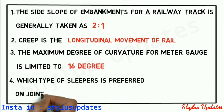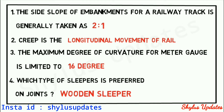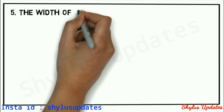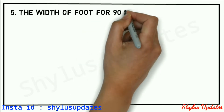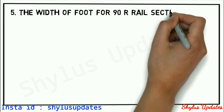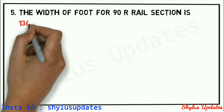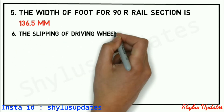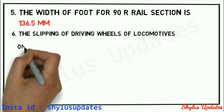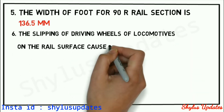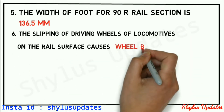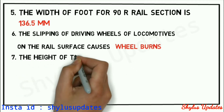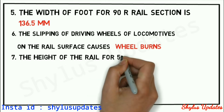The type of sleepers preferred on joints are dense sleepers. The width of foot for 90lb rail section is 136.5 mm. The slipping of driving wheels of locomotives on the rail surface causes wheel burns.